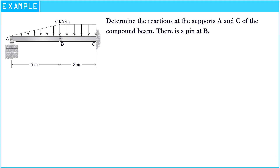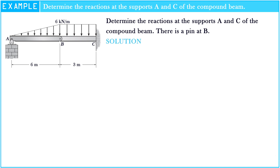Determine the reactions at the supports A and C of the compound beam. There is a pin at B. Look at the figure of the problem. The compound beam is subject to a triangular distributed load, with length from A to B of about 6 meters and B to C about 3 meters.